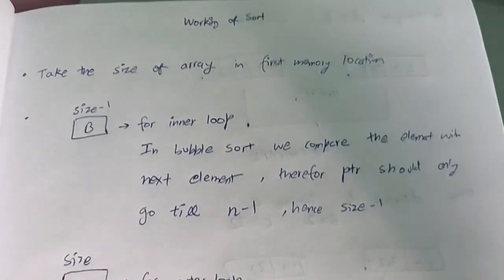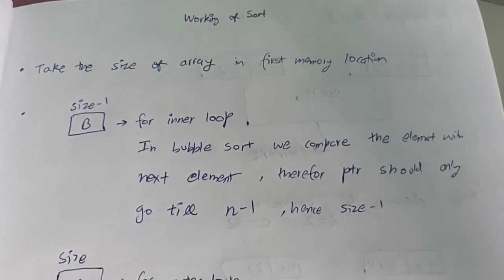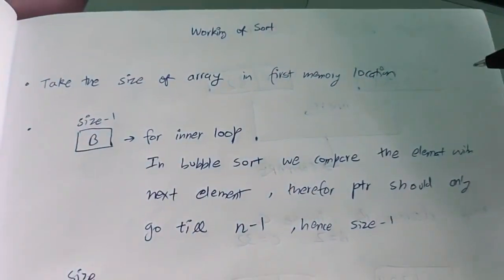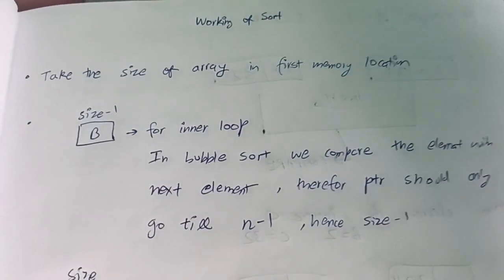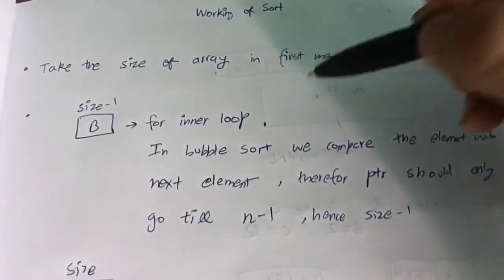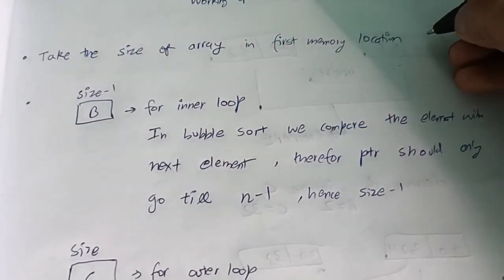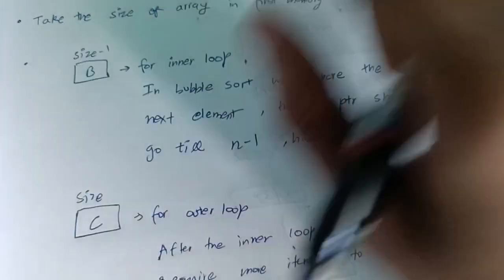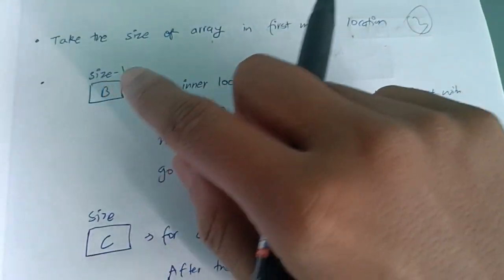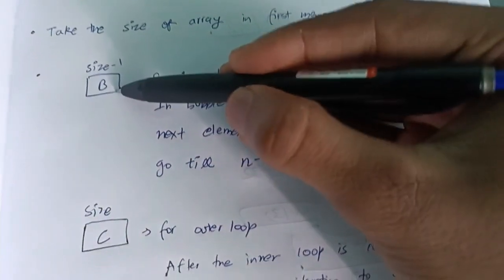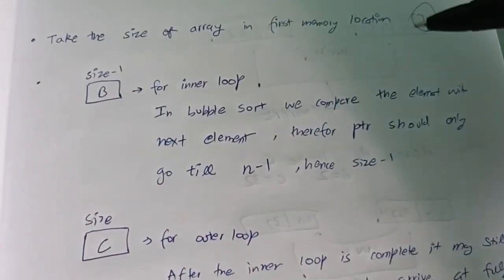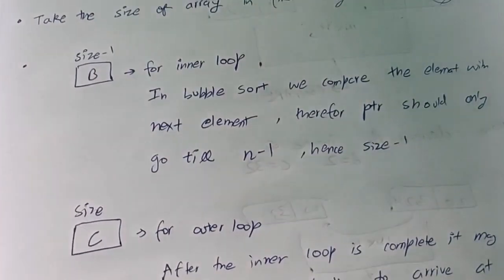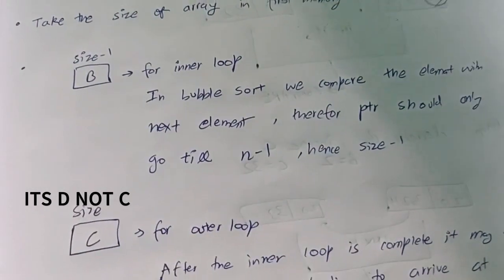Before the sorting video starts, I will explain the mechanism of how sorting works. First we take the size of the array — how many numbers we are giving into consecutive memory locations. We are using two registers for the inner loop and outer loop. We are using bubble sort. Inside register B I am storing size minus one. In bubble sort we compare an element and the next element, so it should go only till n minus one.